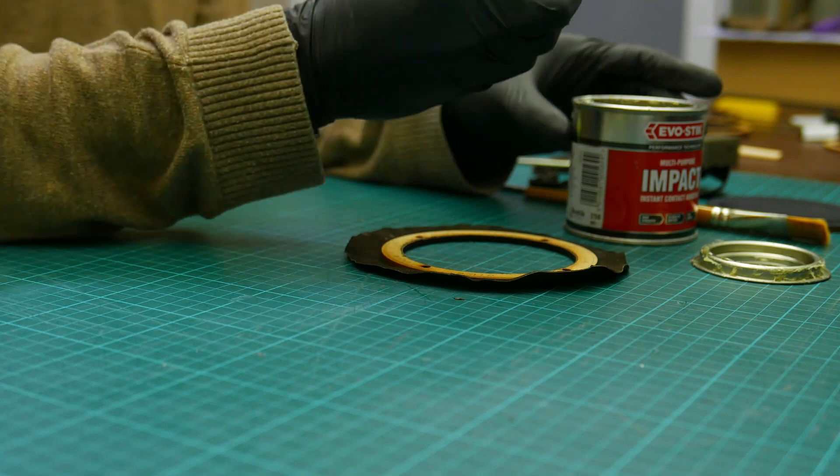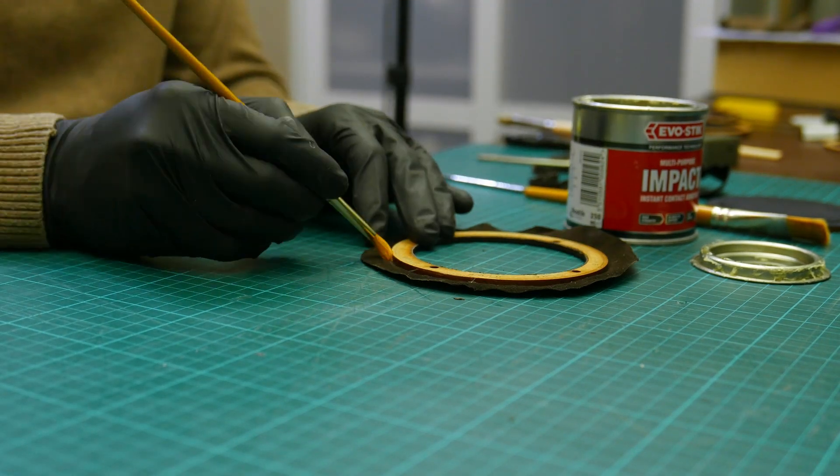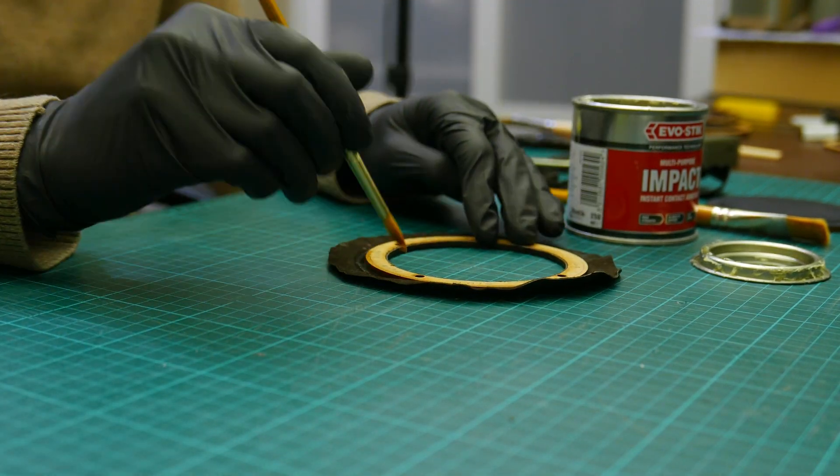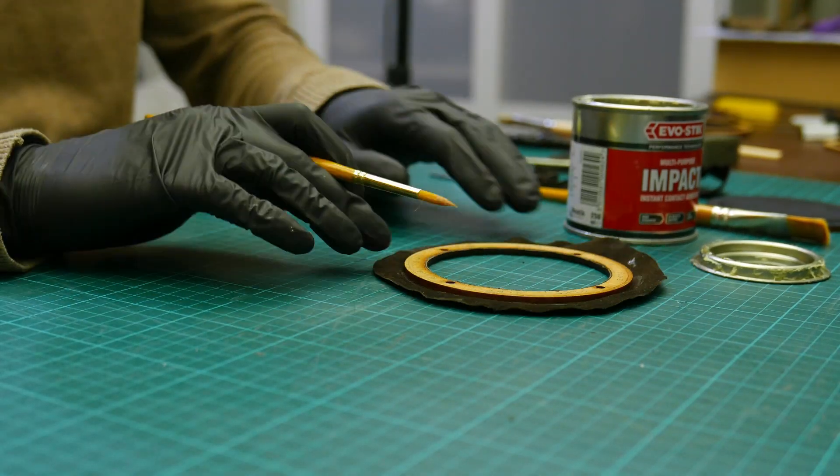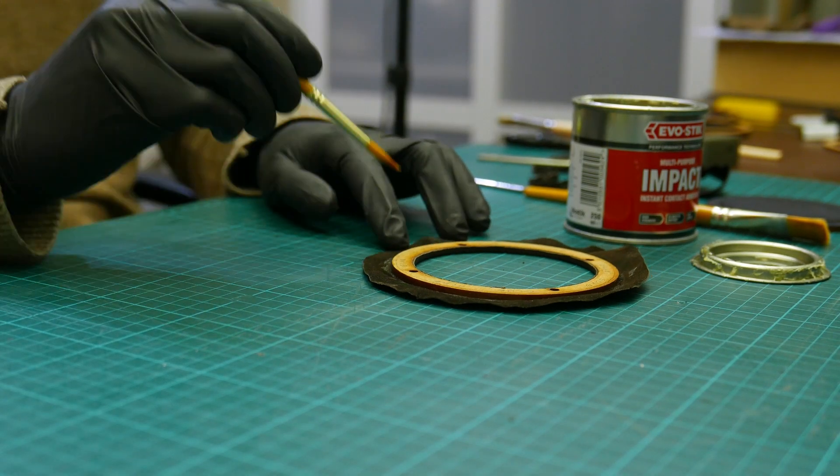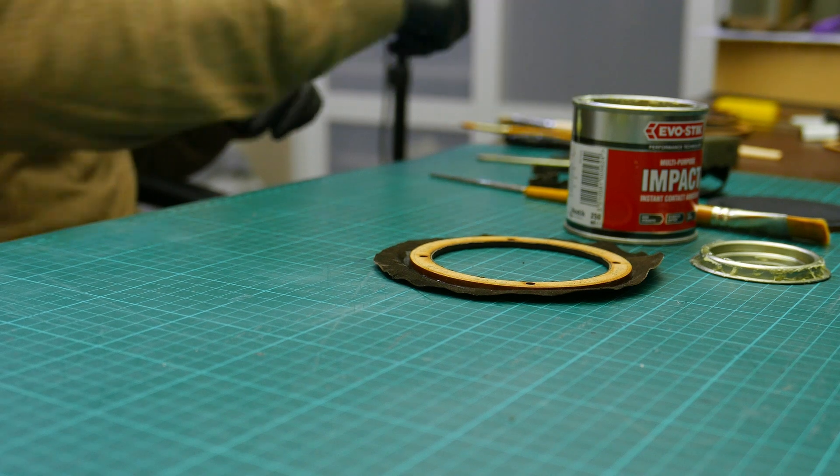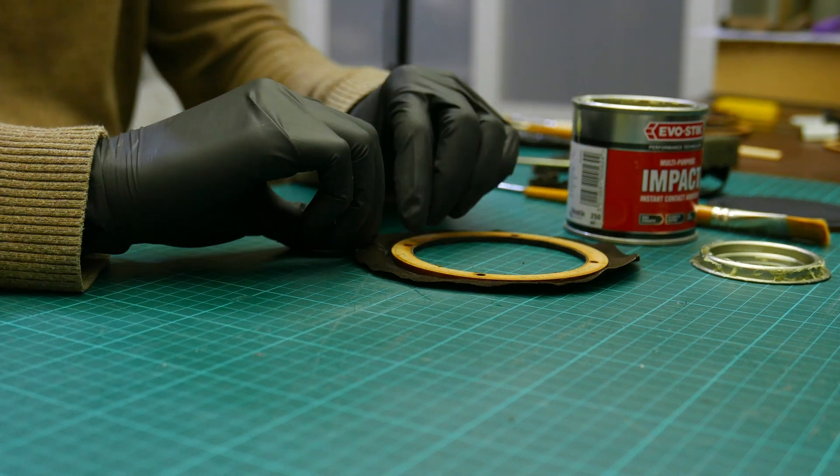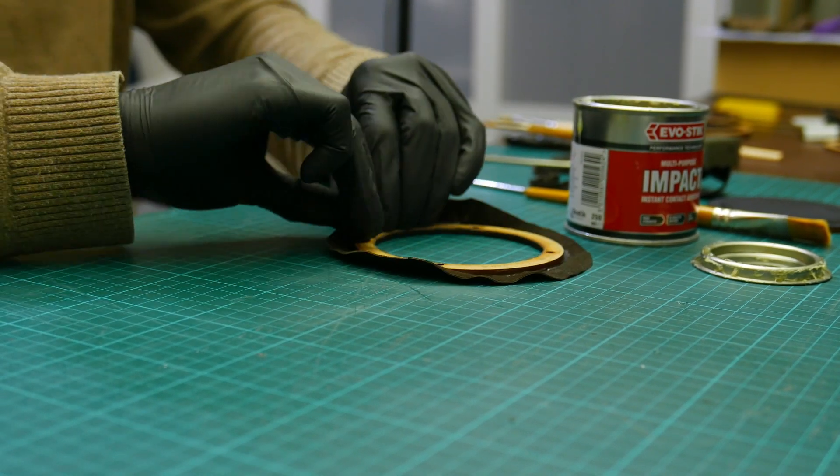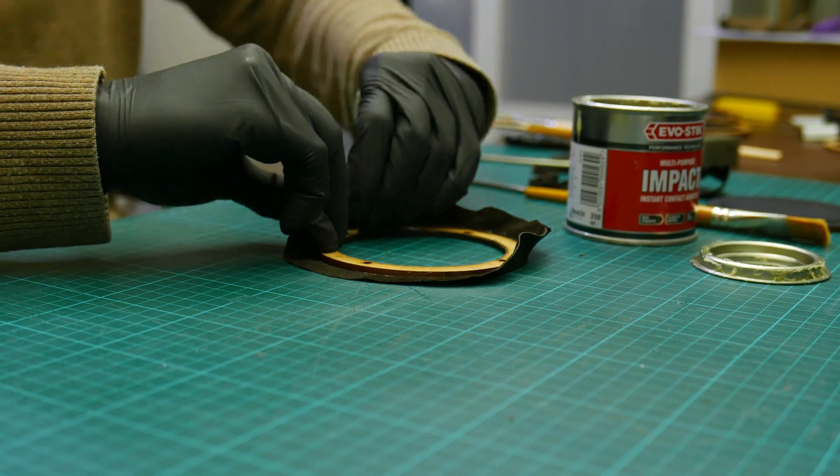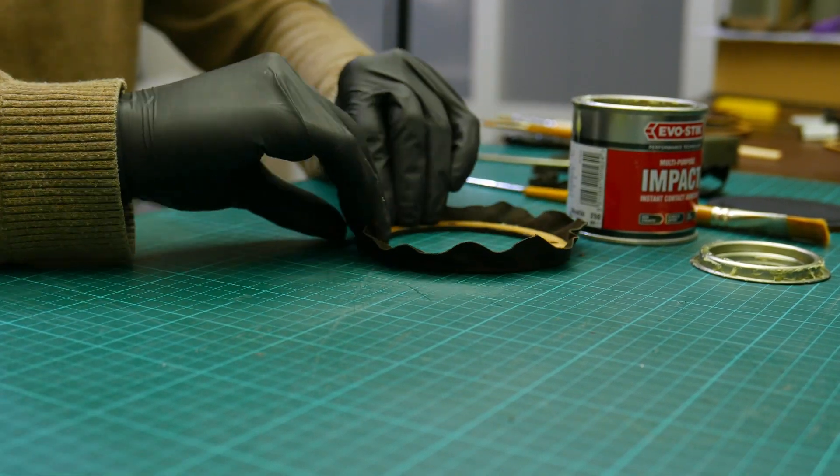Apply the contact cement to both the outer edge's surface and the leather. Pull the leather and press it against the outer edge's surface so the contact cement bonds firmly.